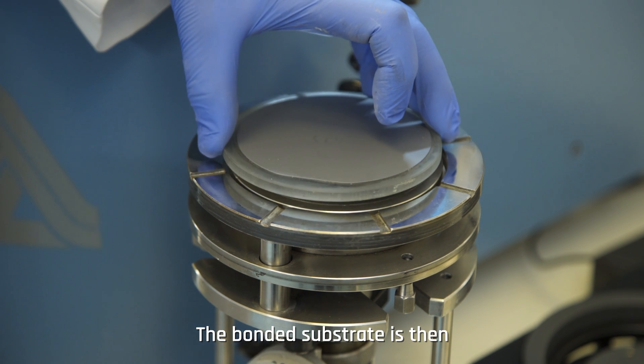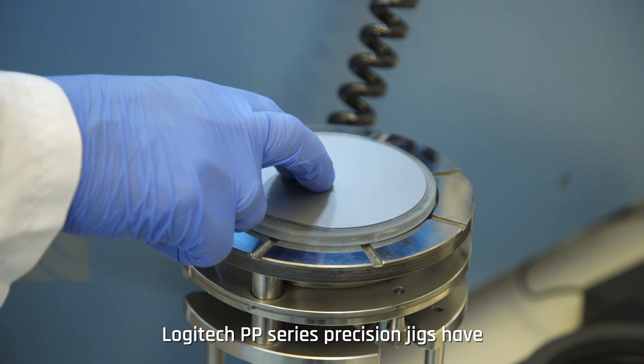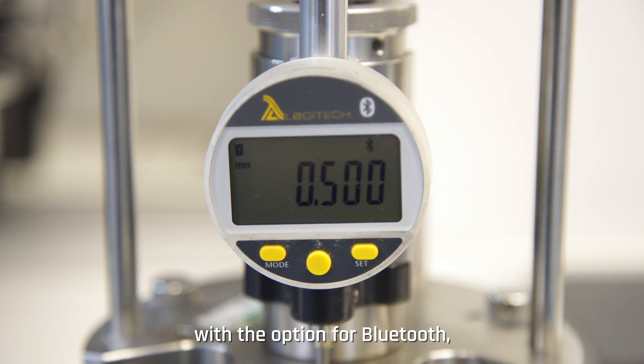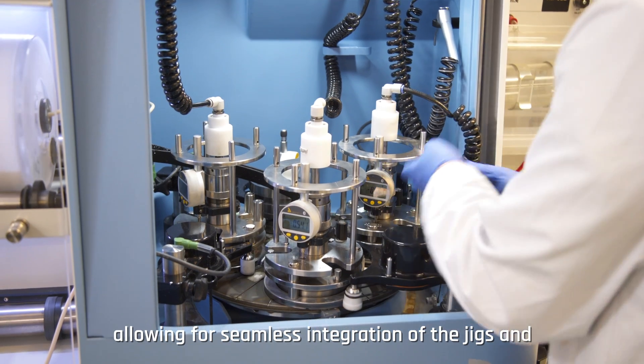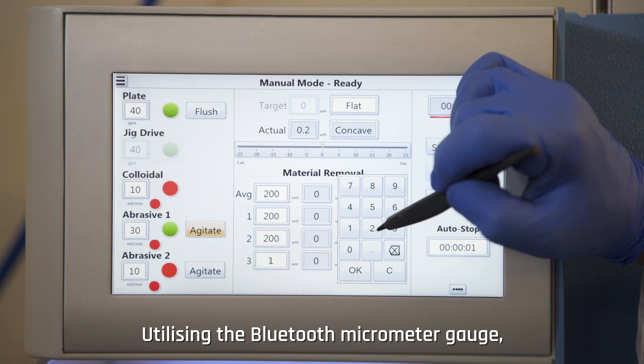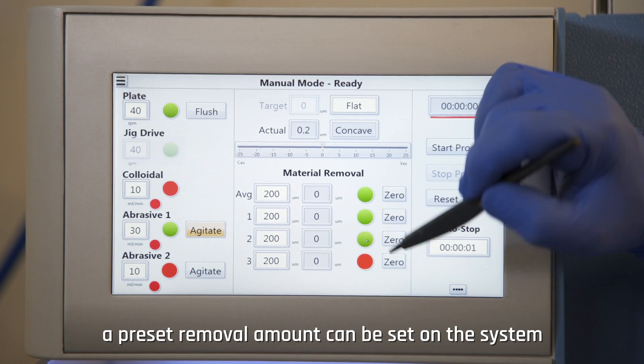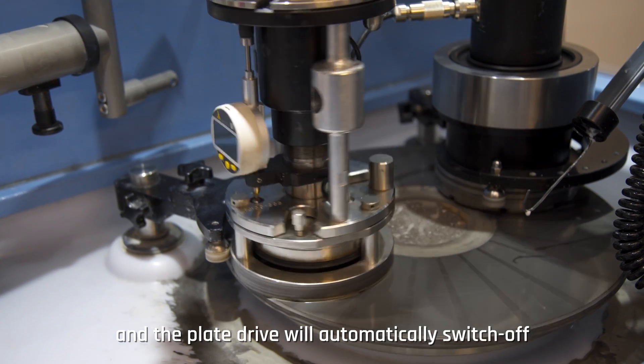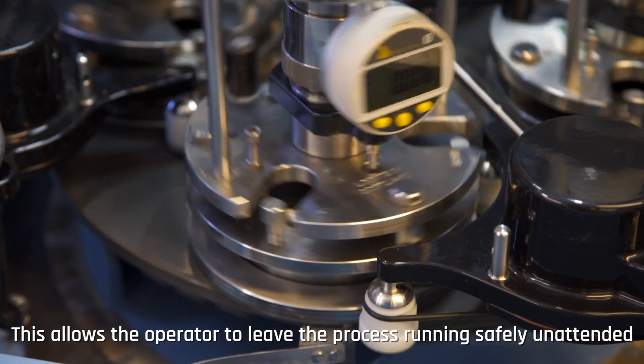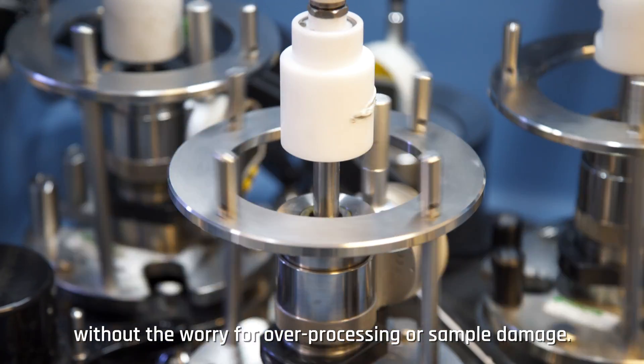The bonded substrate is then mounted onto a Logitech precision jig for processing. Logitech PP series precision jigs have easy to read digital dial gauges with the option for Bluetooth, allowing for seamless integration of the jigs and our range of precision lapping and polishing systems. Utilizing the Bluetooth micrometer gauge, a preset removal amount can be set in the system and the plate drive will automatically switch off when the target amount has been achieved. This allows the operator to leave the process running safely unattended without the worry of over processing or sample damage.